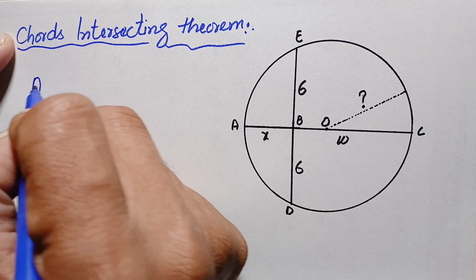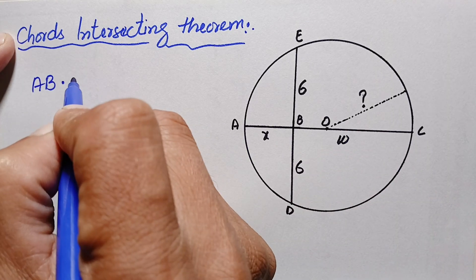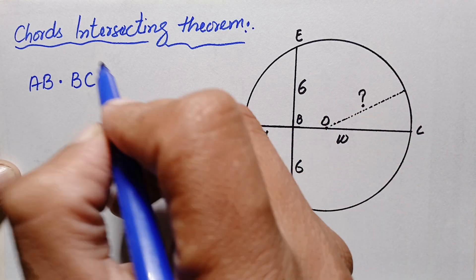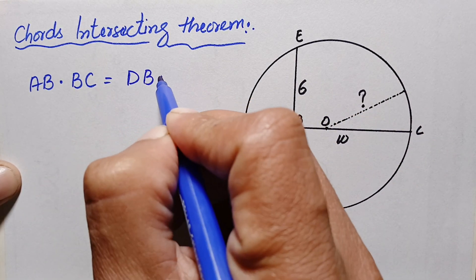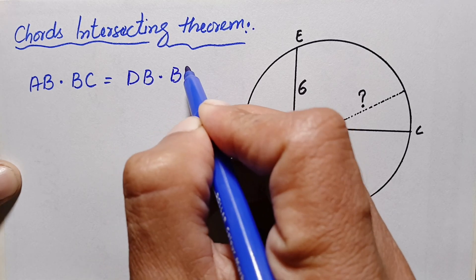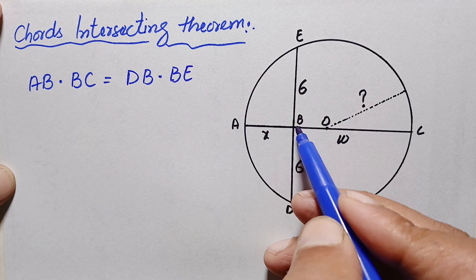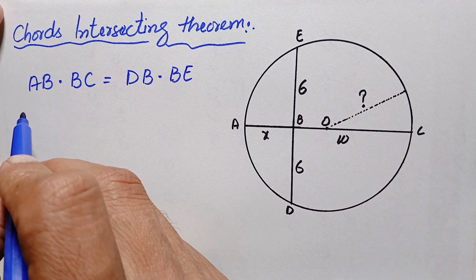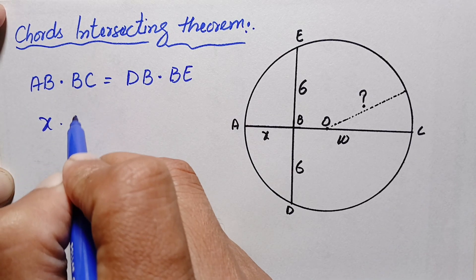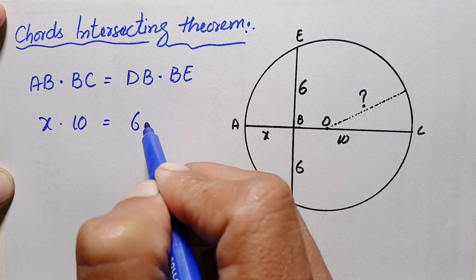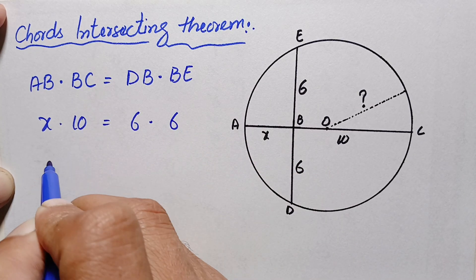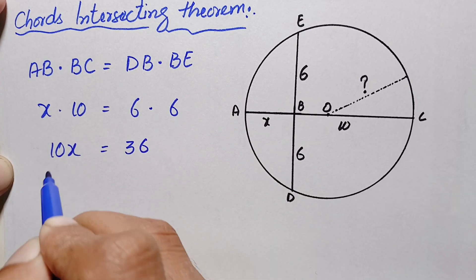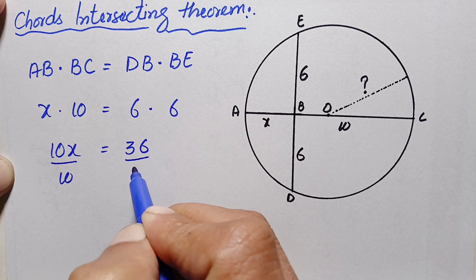Therefore we can write: AB times BC equals DB times BE. Substituting the values from the figure: AB is x, BC is 10, DB is 6, and BE is 6. This becomes x times 10 equals 6 times 6, so 10x equals 36.